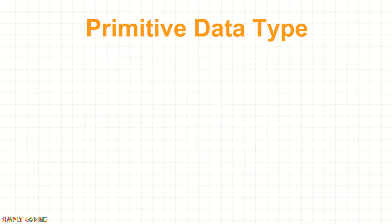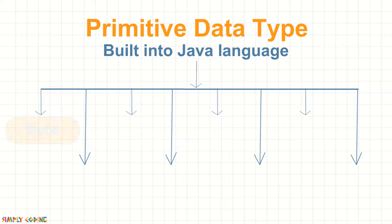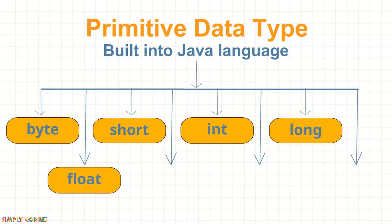Primitive data types are ones which are built into Java language. Java has eight primitive data types which are byte, short, int, long, float, double, char, and boolean.